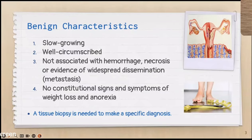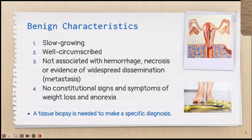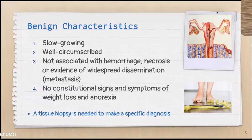When we say benign lesions, it has to have benign characteristics: it should be slow-growing, well-circumscribed, and not associated with hemorrhage. The surface of the lesion will be very smooth, there are no hemorrhages, it's not necrotic, and there is no widespread dissemination or metastasis. The patient will not have signs and symptoms like weight loss and anorexia. However, to confirm that a lesion is truly benign, a biopsy of the tissue has to be done.